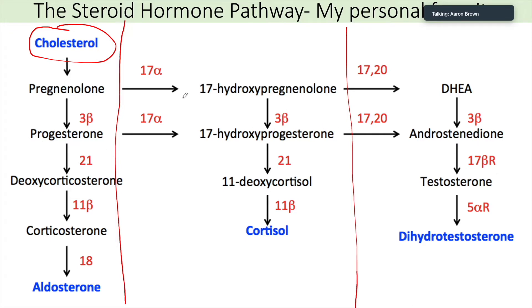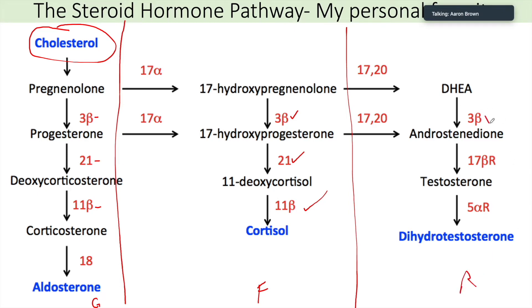What I want you to notice is that all of the layers have the same enzymes inside of them for the most part. As we're moving down this pathway, we see 3-beta hydroxylase, 21-hydroxylase, and 11-beta hydroxylase. If we move from the glomerulosa to the fasciculata, notice the same enzymes are here: 3-beta hydroxylase, 21-hydroxylase, 11-beta. As we move into the reticularis, it changes a little bit, but we still have that 3-beta.